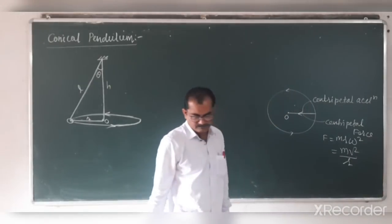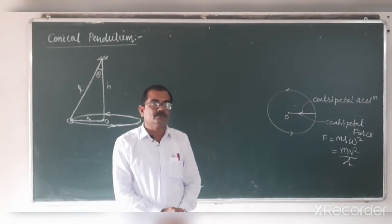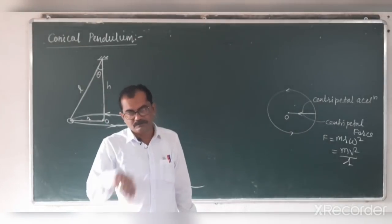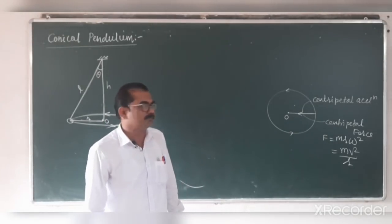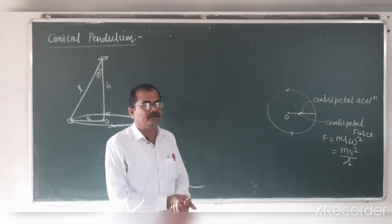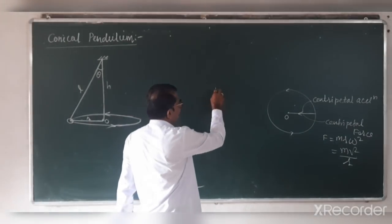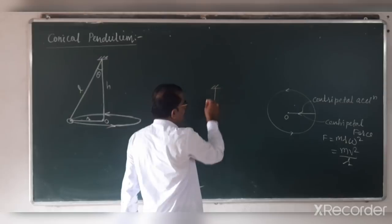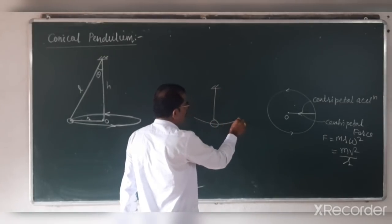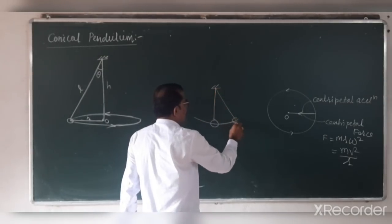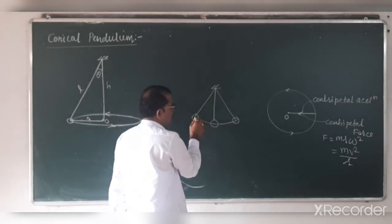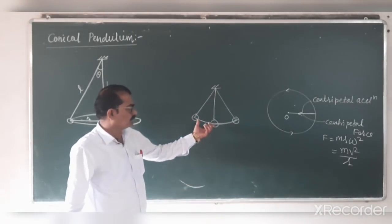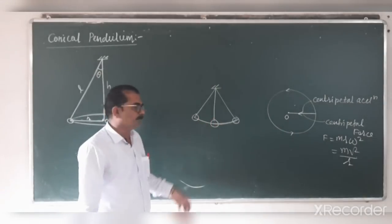We derived that formula. Now today we have to discuss the conical pendulum. You know about the simple pendulum or pendulum clock — a heavy mass suspended by a string that performs to-and-from motion on a curved path. This path is curved in a vertical plane; such a pendulum is called a simple pendulum.